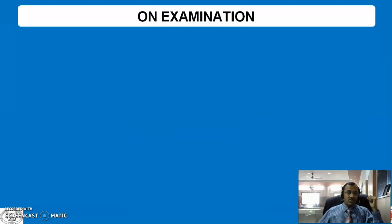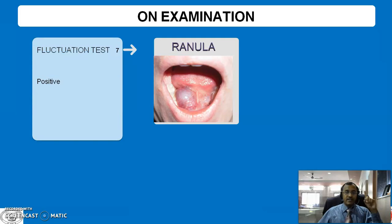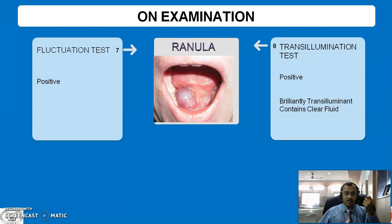On examination, this swelling can be diagnosed on clinical examination with fluctuation test positive and transillumination test positive. The fluctuation test is performed by holding the swelling between two fingers, pressing one side of the swelling, and observing the transmitted impulse to the opposite side. In the transillumination test, in a dark room, if you shine a torch against the swelling, it becomes brilliantly transilluminated as it contains very clear fluid. These two tests are diagnostic of Ranula.